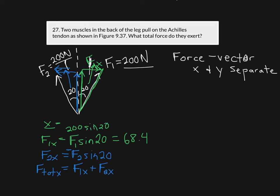F2 is also 200, so F2x is 200 times sine of 20 as well, but with a negative sign because it's going in the opposite direction — giving negative 68.4 Newtons. When I add these two together, F_total_x equals zero, so there's no net x-force pulling the Achilles tendon left or right.